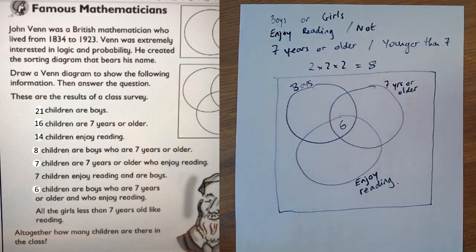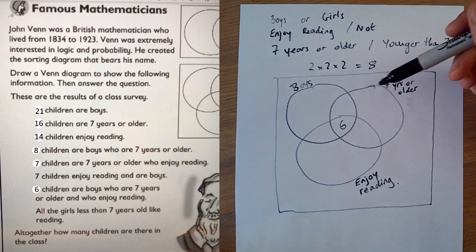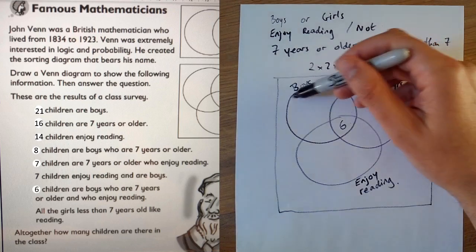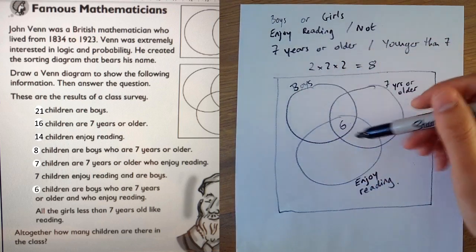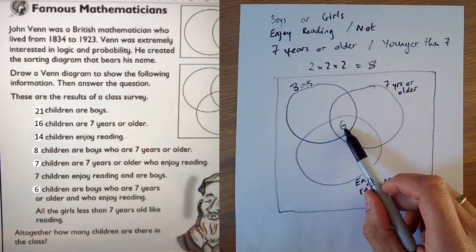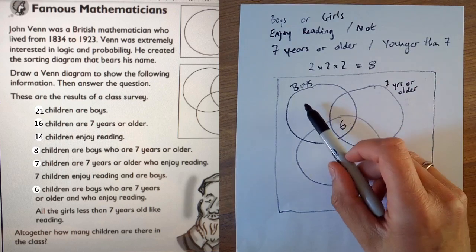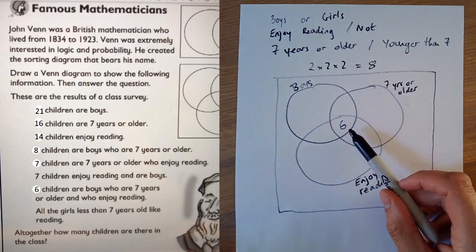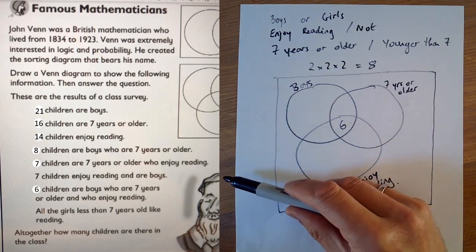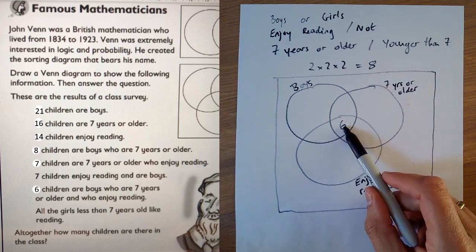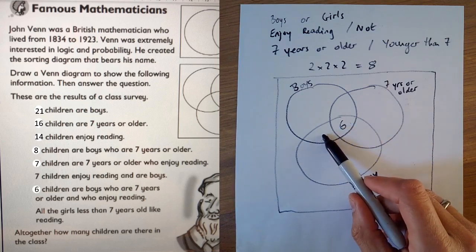Seven children enjoy reading. Seven children enjoy reading and are boys. So we need to look here where the boys who enjoy reading are. Here are the boys. Here are the enjoy reading. It's this one. But it's also this one as well. Because these six people are definitely boys who enjoy reading. They happen to be seven years or older as well. But that fact there doesn't say anything about age. So these two numbers have to add up to seven. The common mistake is to put seven there.